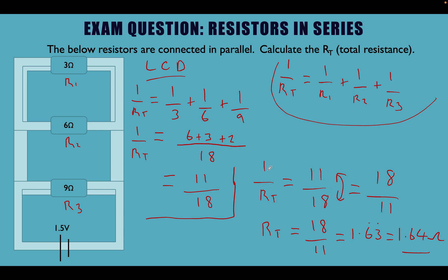Don't be confused by the word 'reciprocal' — all it means here is that if 1 over Rt equals 11 over 18, we can flip it: Rt equals 18 divided by 11, which equals 1.63 recurring, rounded to 1.64. That's the same answer we got using the calculator method. Personally I think the calculator method is quicker, but it's good to know both ways.